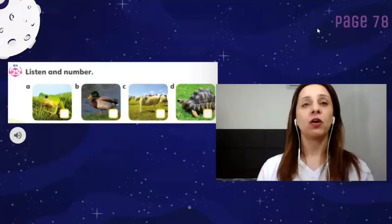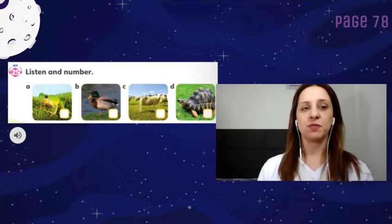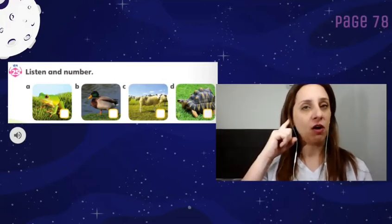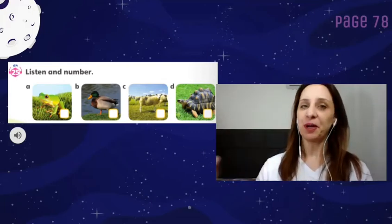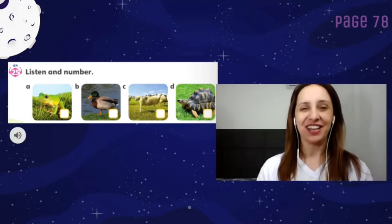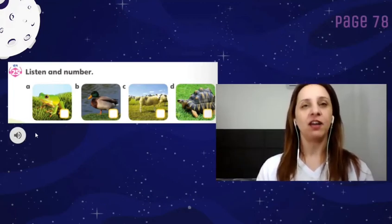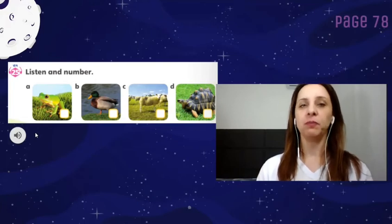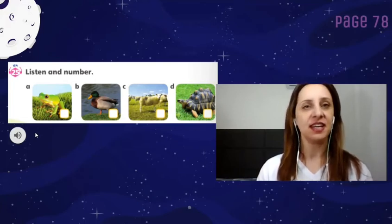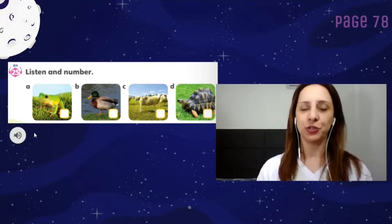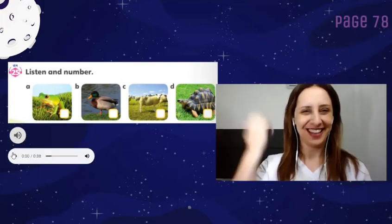Now, we are going to do the activity number 25. Agora, nós vamos fazer a atividade número 25. You are going to listen to the audio and number. Pay attention. Você vai ouvir o áudio e vai enumerar. Colocar número 1, 2, 3 e 4. Let's start.